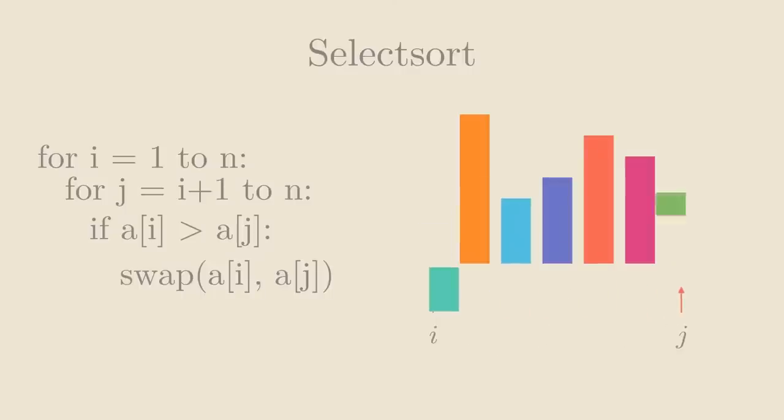This is the algorithm where you repeatedly find the smallest element and move it to the left. You can implement it like this, with two for loops and a conditional swap.